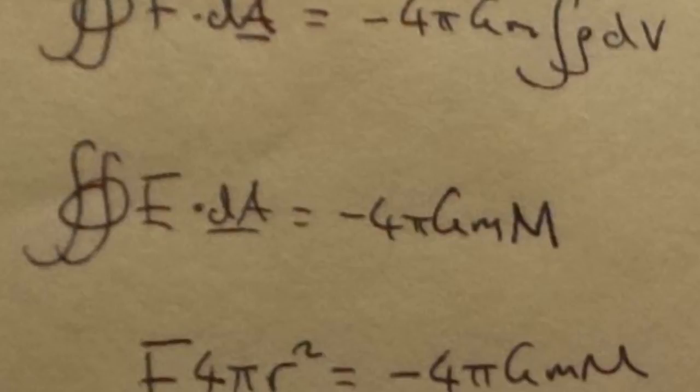And so you have the integral form of Gauss's law here, which is that the surface integral. So this is an arbitrary surface. So I can just draw this surface and the integral of the force dotted with the perpendicular surface element at that point. And the integral across the whole surface is equal to minus 4 pi GM.